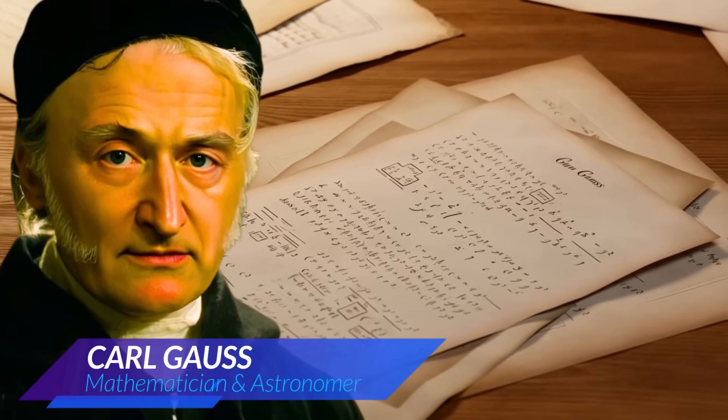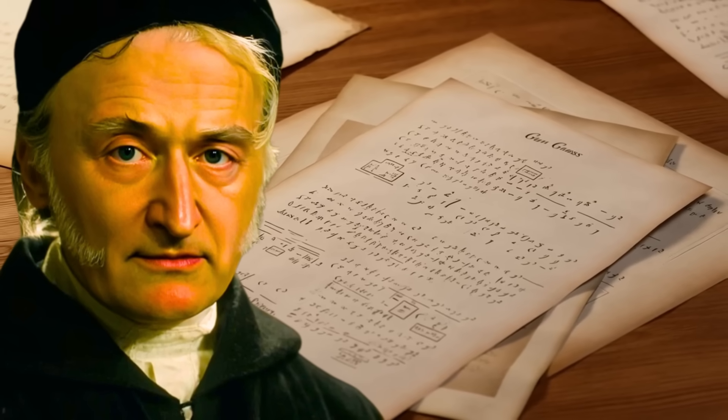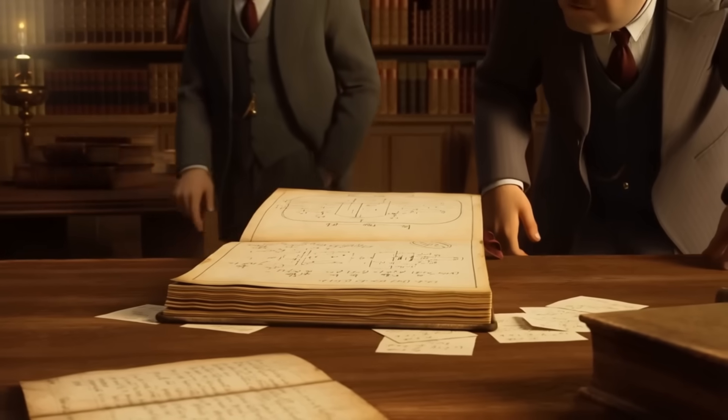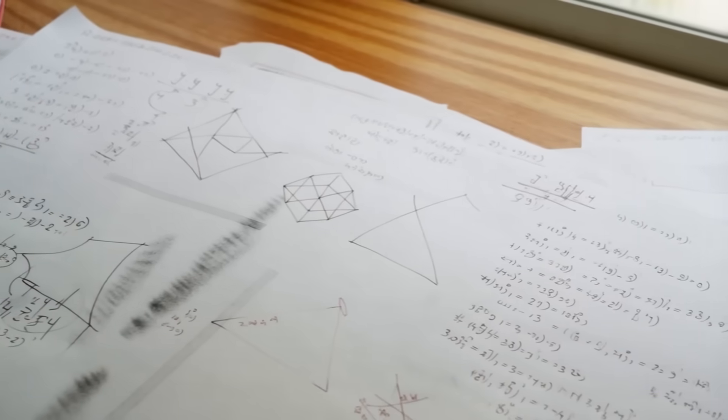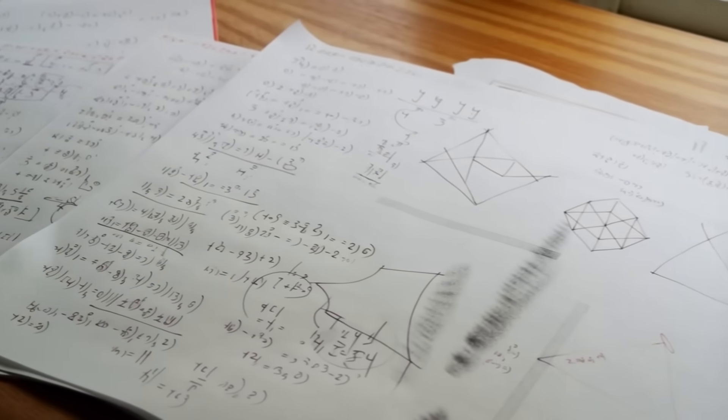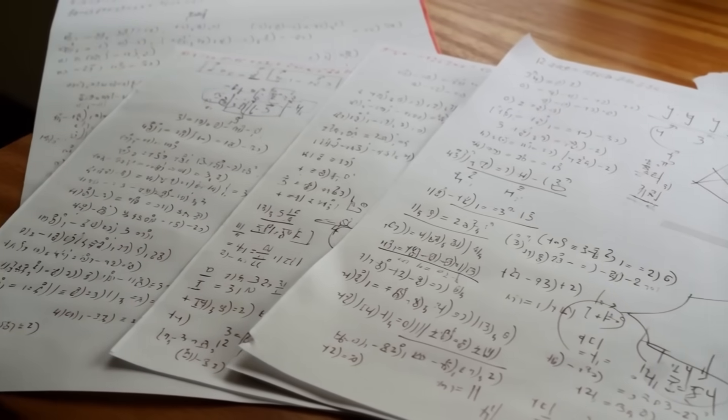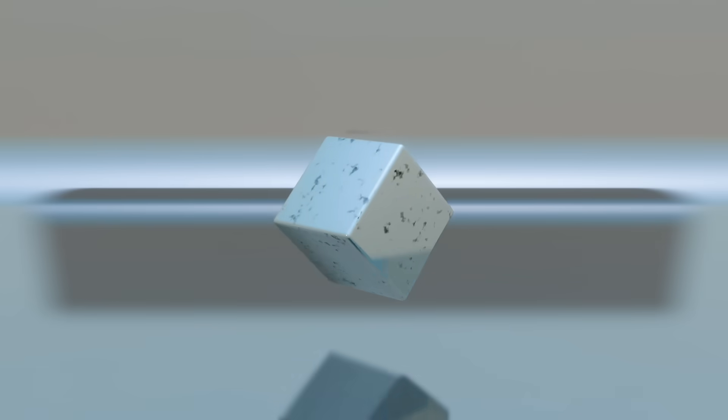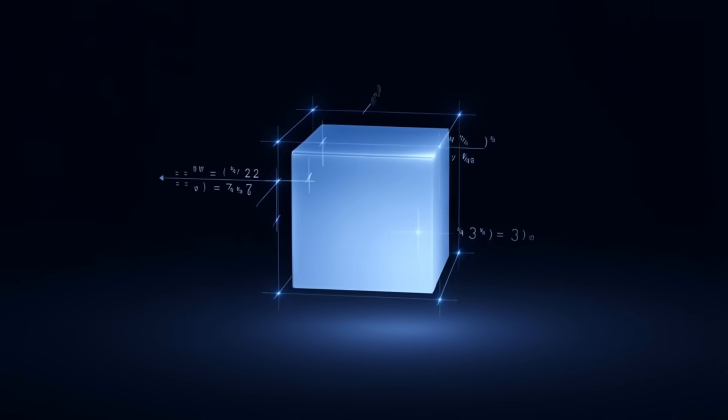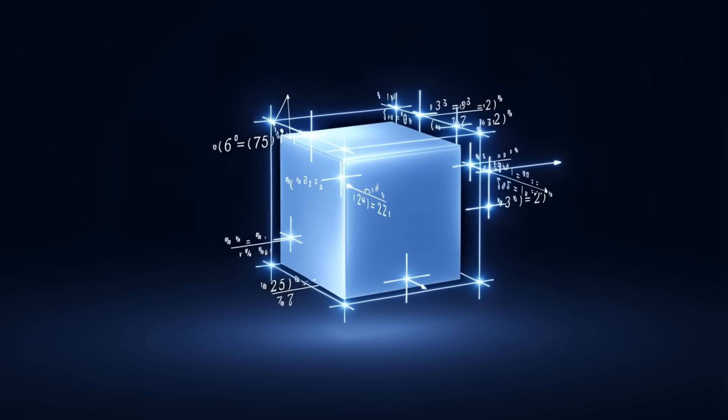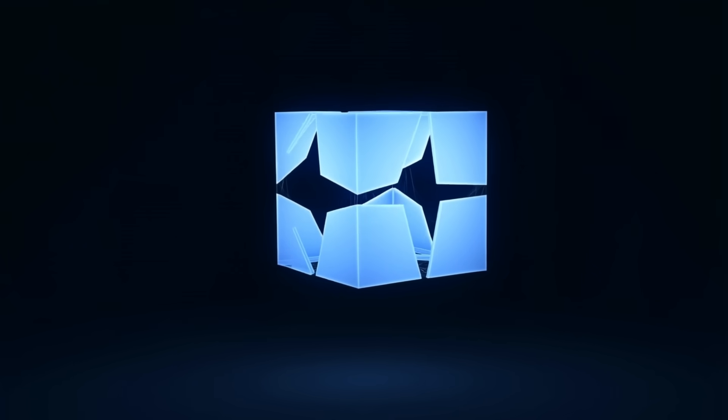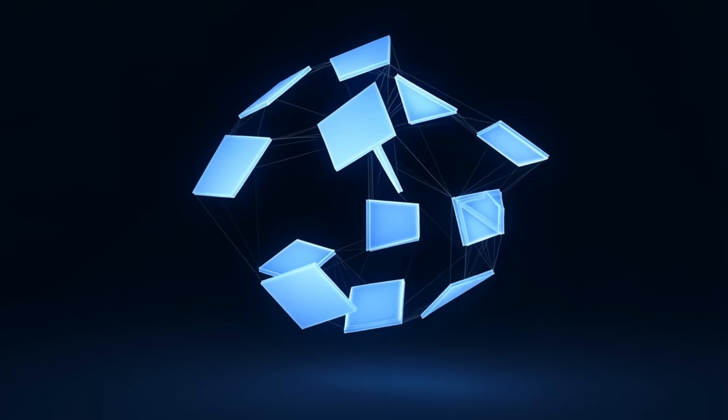For two centuries, Carl Friedrich Gauss's law of composition stood like a monument, beautiful, mysterious, impenetrable. Mathematicians studied it, admired it, taught it. But few dared to imagine that it could be extended. Bhargava did not merely extend it. He reinvented it. Instead of manipulating long classical formulas, he pictured something astonishingly simple. A cube. Eight corners, 12 edges, six faces. And within that cube, he discovered hidden symmetries that allowed him to generalize Gauss's composition law into an entire family of new laws. Suddenly, old problems opened up like locked doors. The Bhargava cube became a new lens through which number theorists could see centuries-old structures with complete clarity. It wasn't just a breakthrough. It was an earthquake.